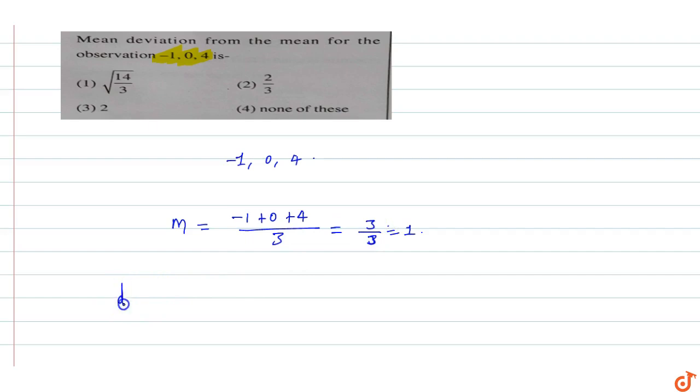We have to find the mean deviation. So deviation from the observations: -1 gives us |-1 - 1|, zero gives us |0 - 1|, and 4 gives us |4 - 1|.